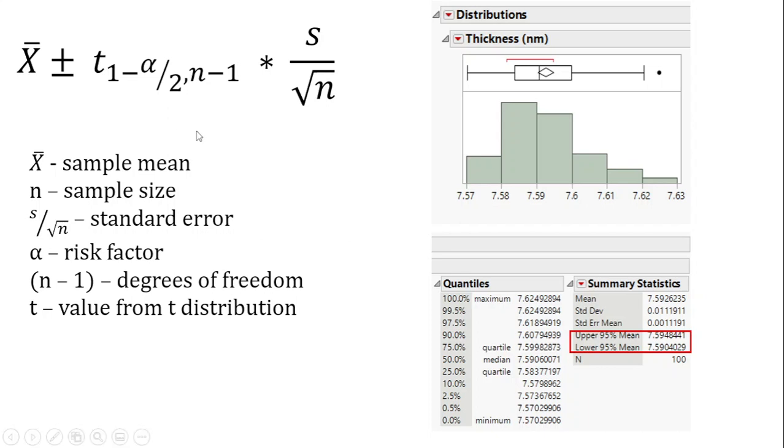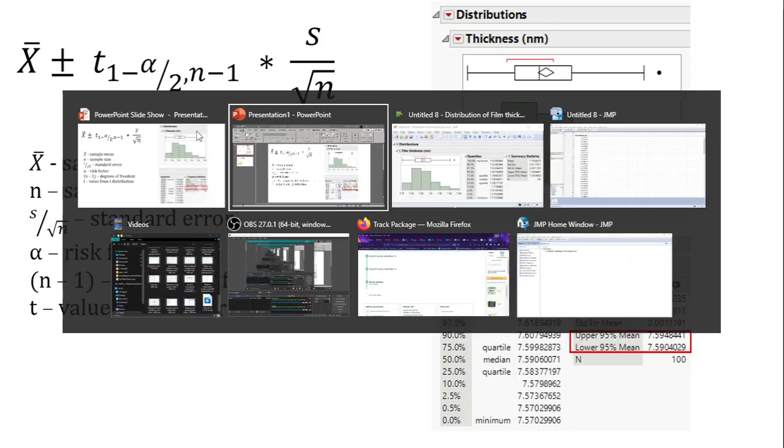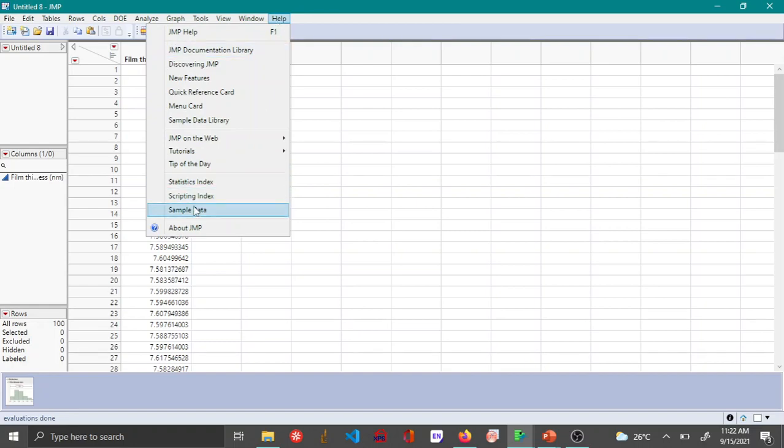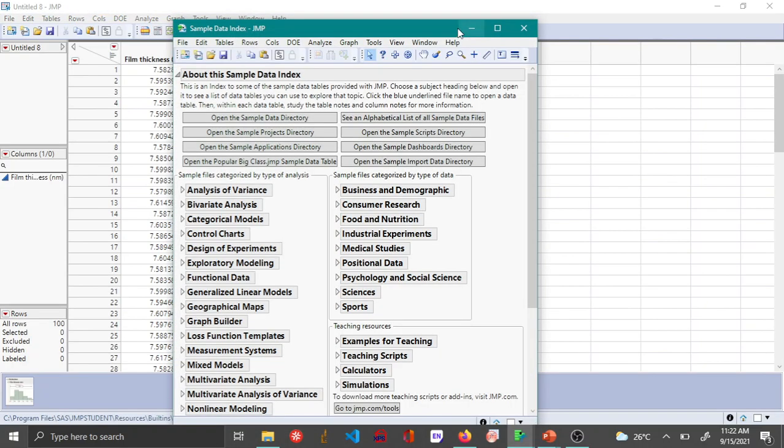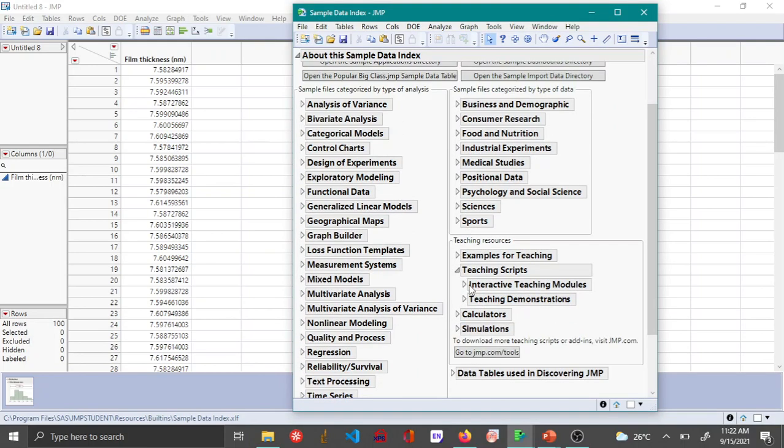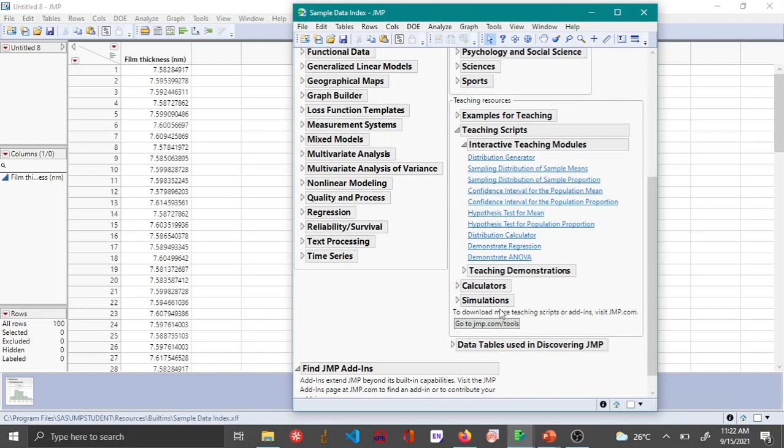And now let me switch over to JMP to show you how to calculate the t-distribution. To open the t-distribution you can go to Help, go to Sample Data, and here in the help menu you can open Teaching Scripts, go to Interactive Teaching Modules, and here you can open Distribution Calculator.